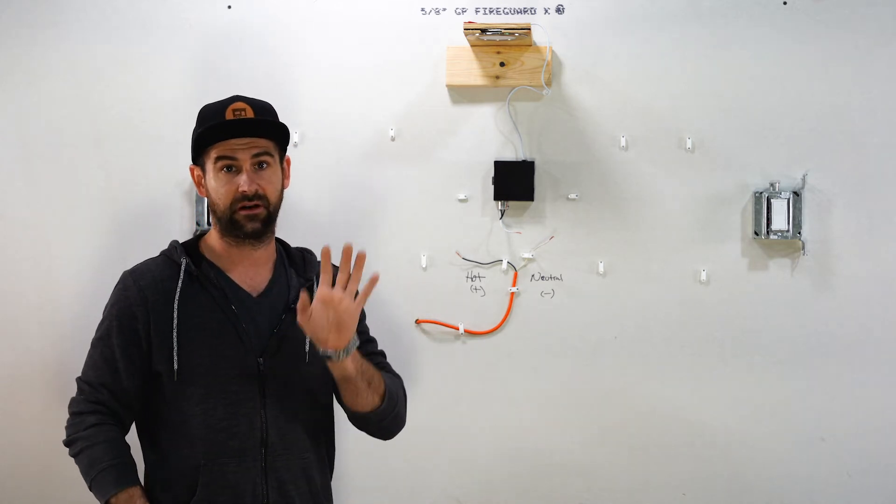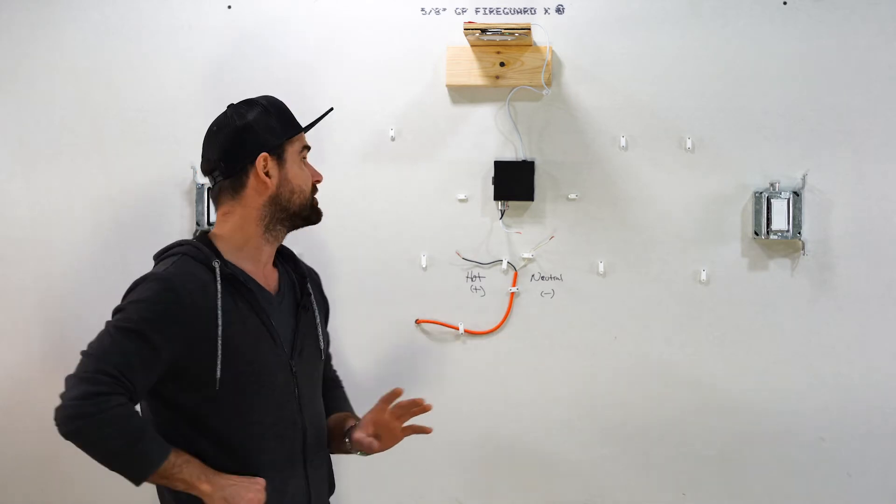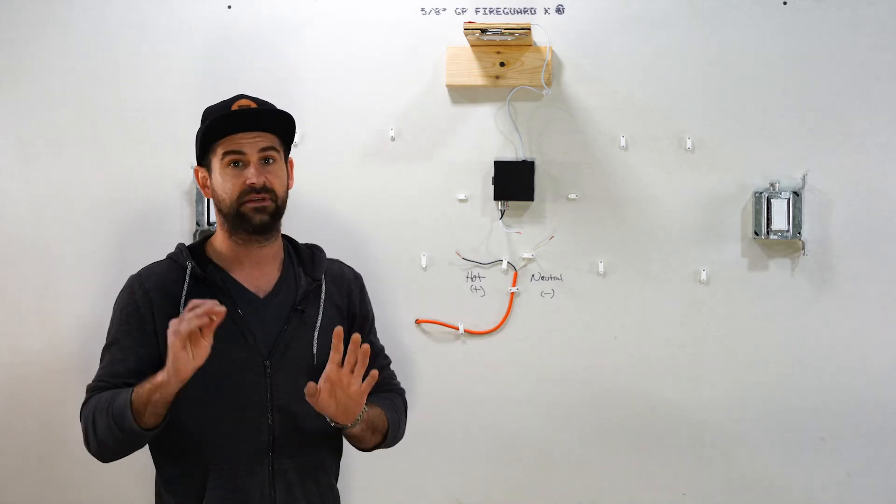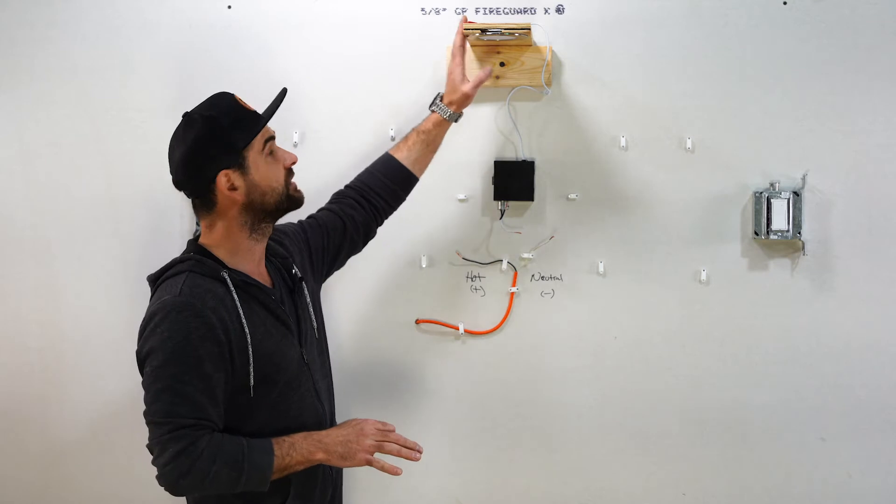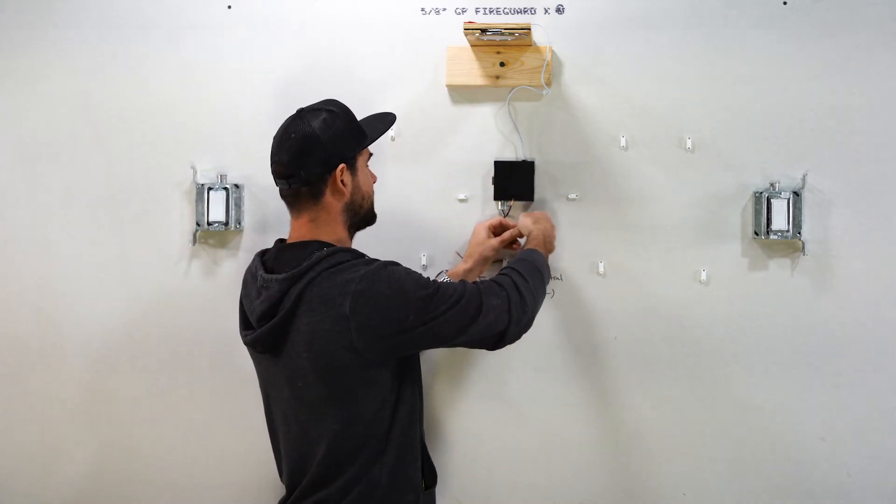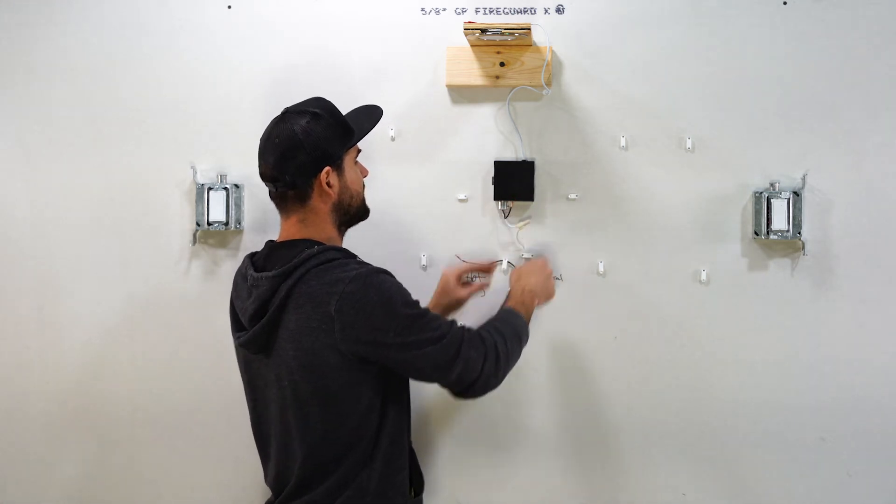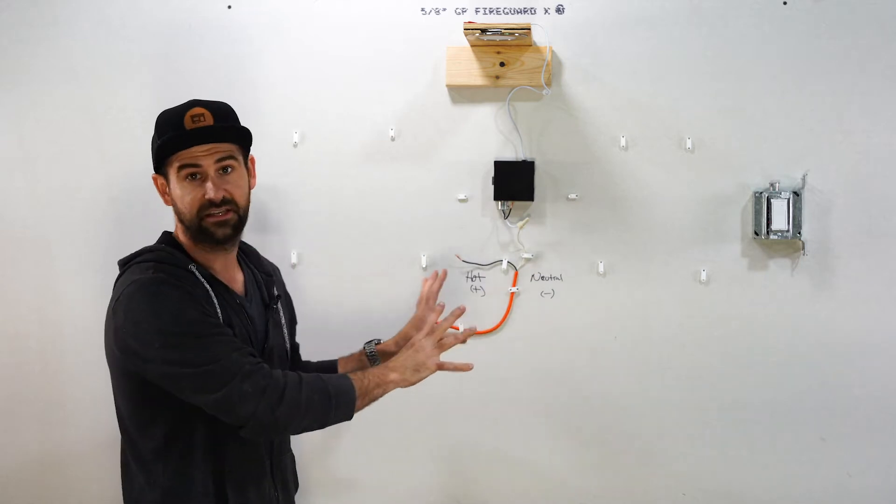So the first step that I always try to get out of the way when it comes to switches is we get the neutral out of the equation. So in this case the only thing that needs to be connected to a neutral is going to be the light fixture. So we're going to take the white from the light fixture and that's going to get connected to the neutral. See the easiest way to do this is start to eliminate what you already have existing right here.